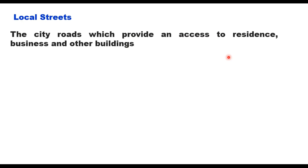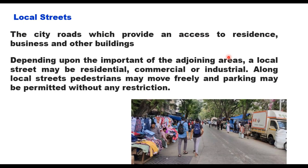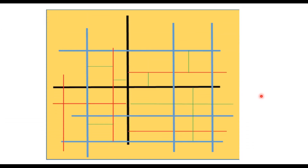Local streets are city roads that provide access to residences, businesses, and other buildings. Depending on the importance of the adjoining area, a local street may be residential, commercial, or industrial. Along local streets, pedestrians may move freely and parking may be permitted without any restriction.